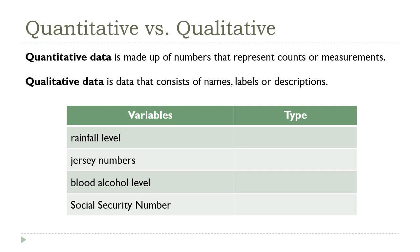Rainfall levels are numbers — usually inches or centimeters — that measure how much rain has fallen, so this is a quantitative variable. Jersey numbers, though they are numbers, aren't measurements; they're just labels given to each player that could be replaced with letters. So jersey numbers are qualitative. Blood alcohol level is a measure of how much alcohol is in a person's blood, making it quantitative. Social security numbers, despite being numbers, are just labels for distinguishing between people and aren't measuring or counting any property, so they are qualitative.